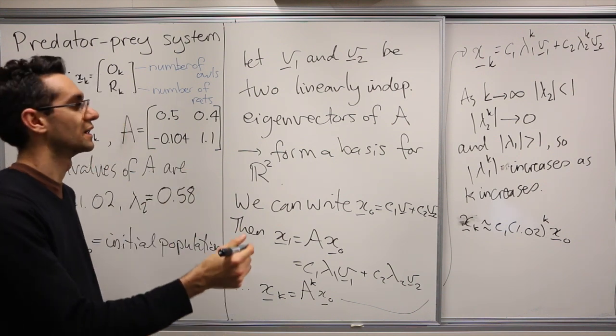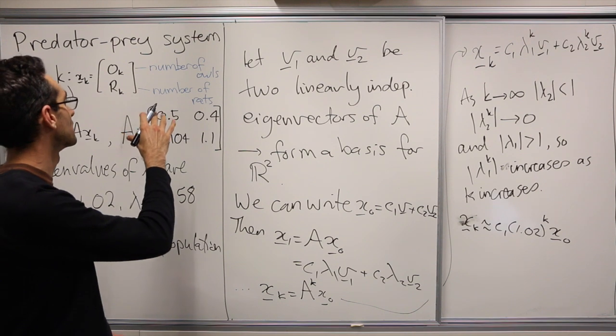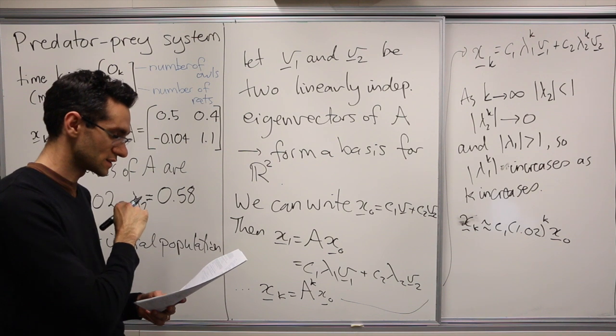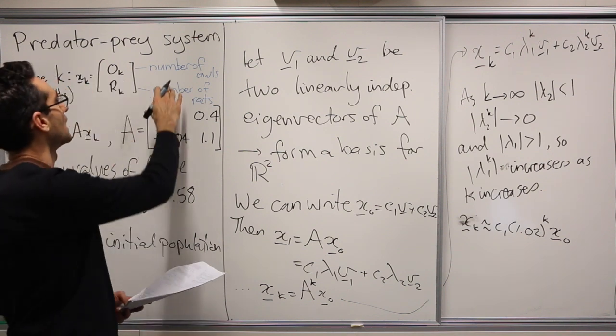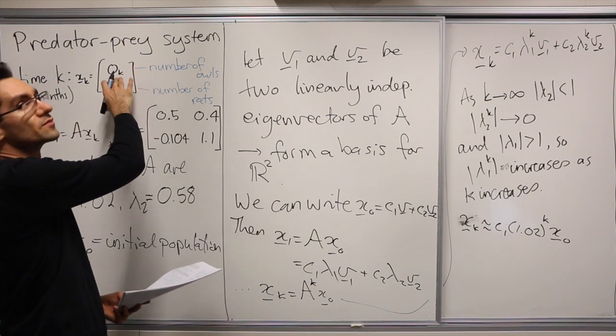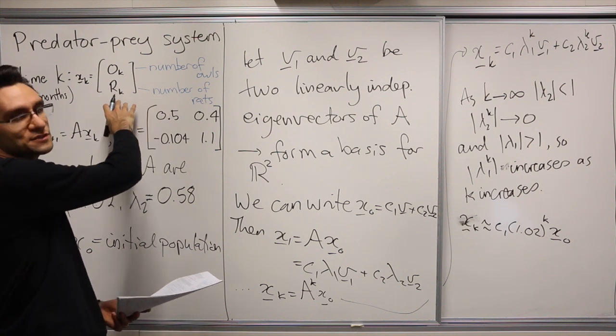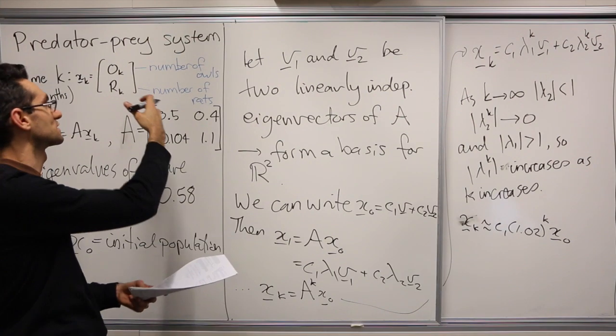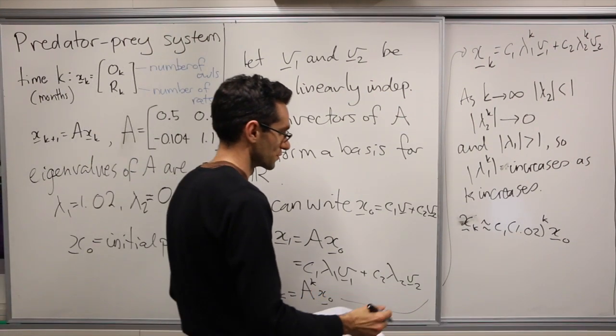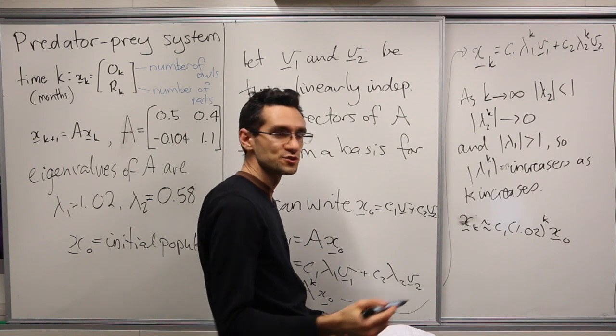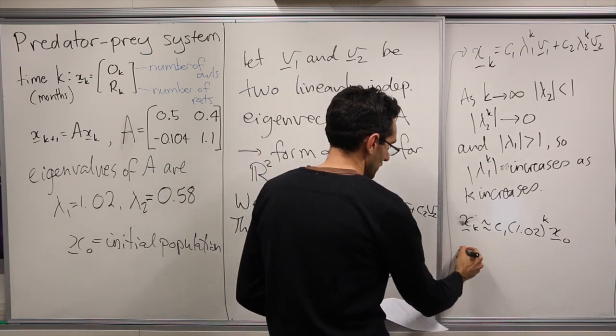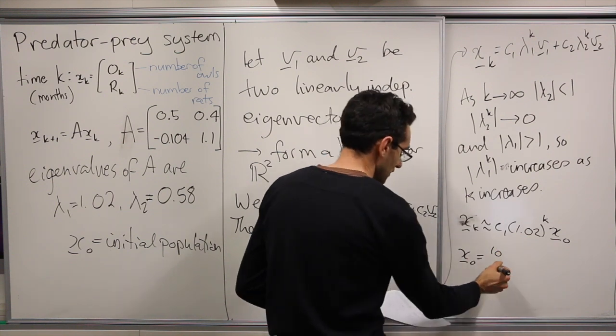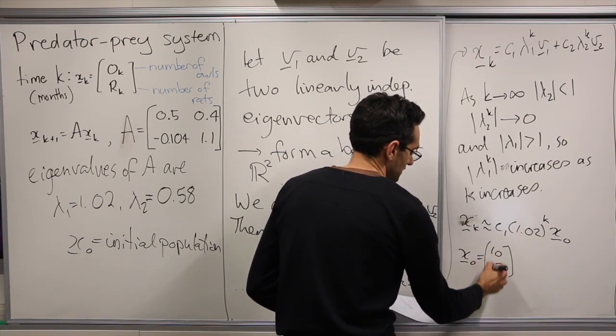But as it states in the example sheet, the owl population is measured in owls, but the rat population is measured in thousands. So we have so many more rats, we just scale it appropriately. For instance, if we have an initial population of x0 being 10 owls per 13,000 rats, then we can see that the populations of both grow over time.